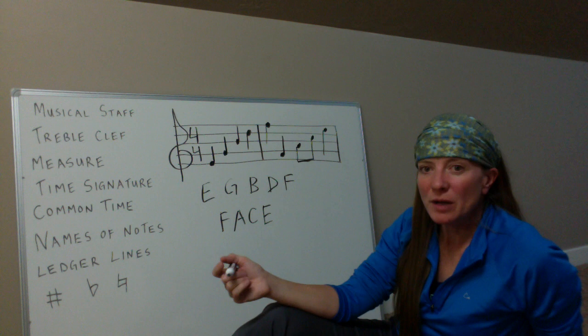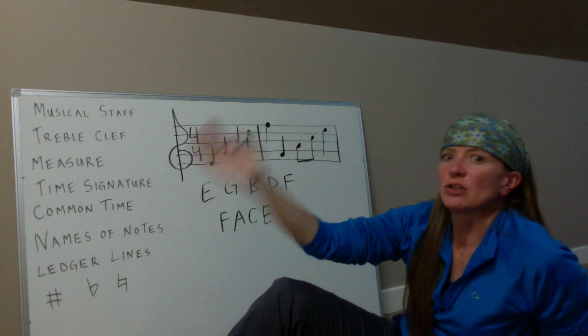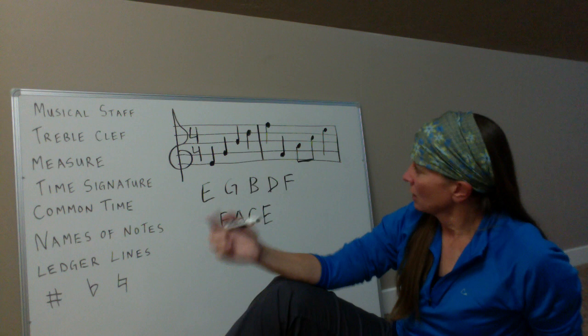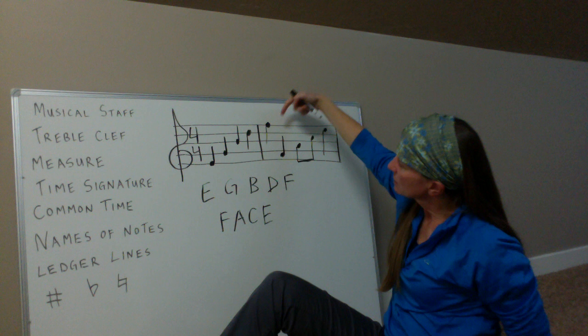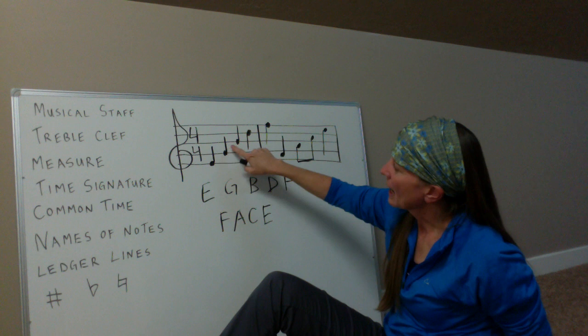The only confusing part is: if you're at G and I ask what's the note after G, you might want to say H — but there is no H. After G, you start back at A. Going up the staff means going forward in the alphabet: E, F, G, A, B, C, D, E, F, and so on.